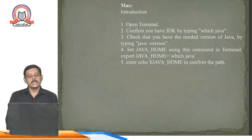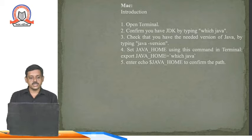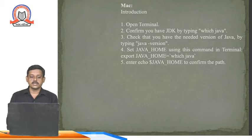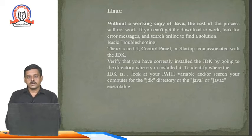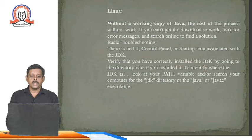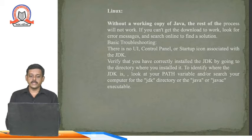On Mac OS, open a terminal and confirm JDK by typing 'which java', then type 'java -version' to see the installed version. Enter 'echo $JAVA_HOME' to confirm the path. On Linux, check whether Java was installed without any errors by doing basic troubleshooting. If there is no UI or control panel, verify the JDK association and then directly enable the path for Java.